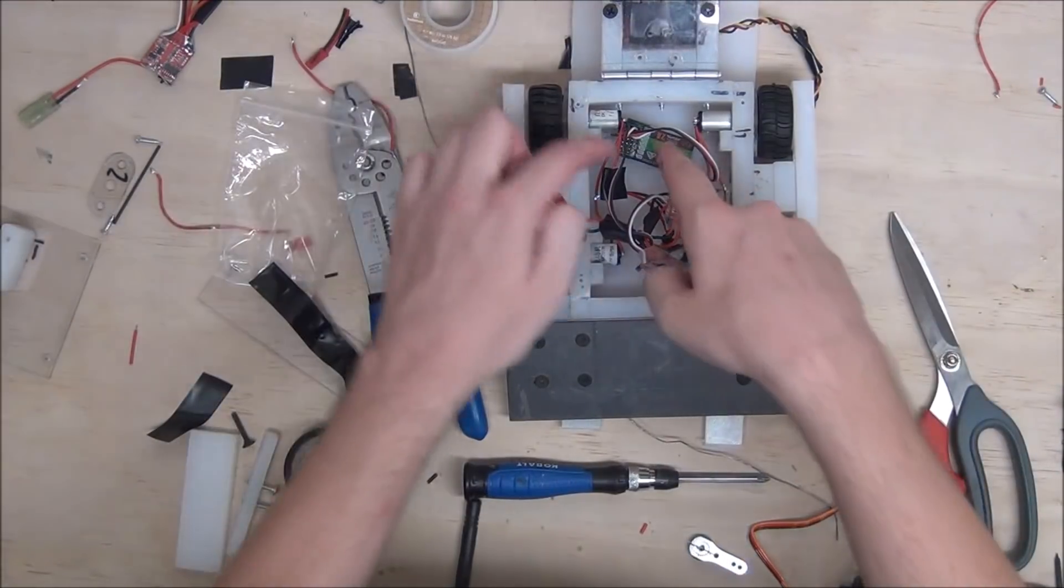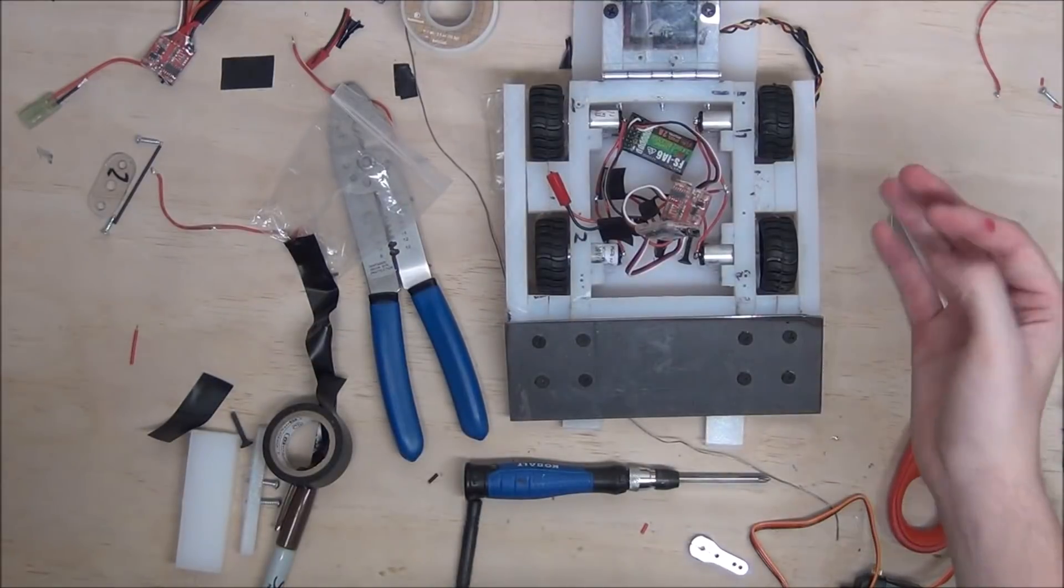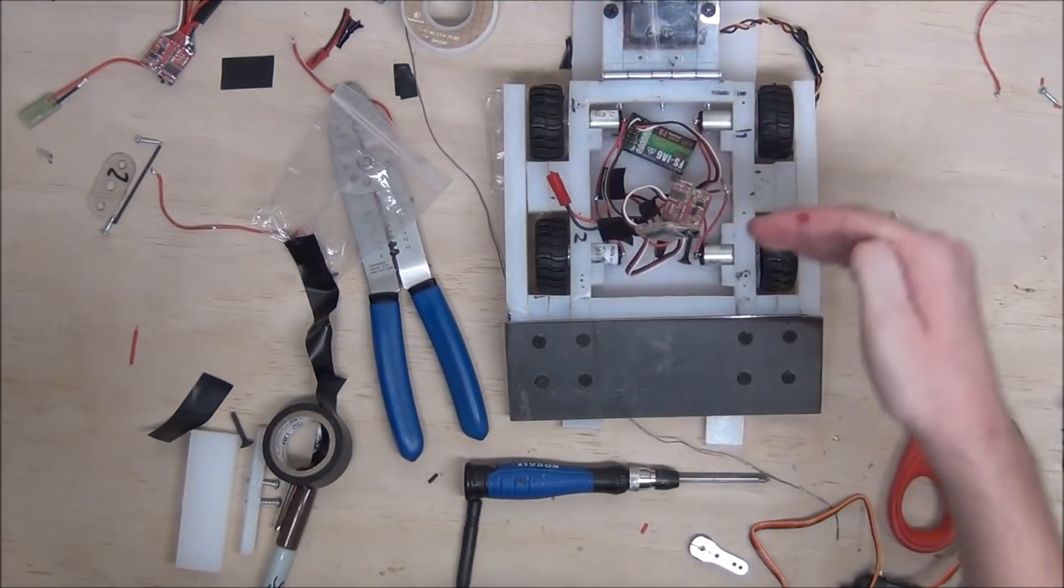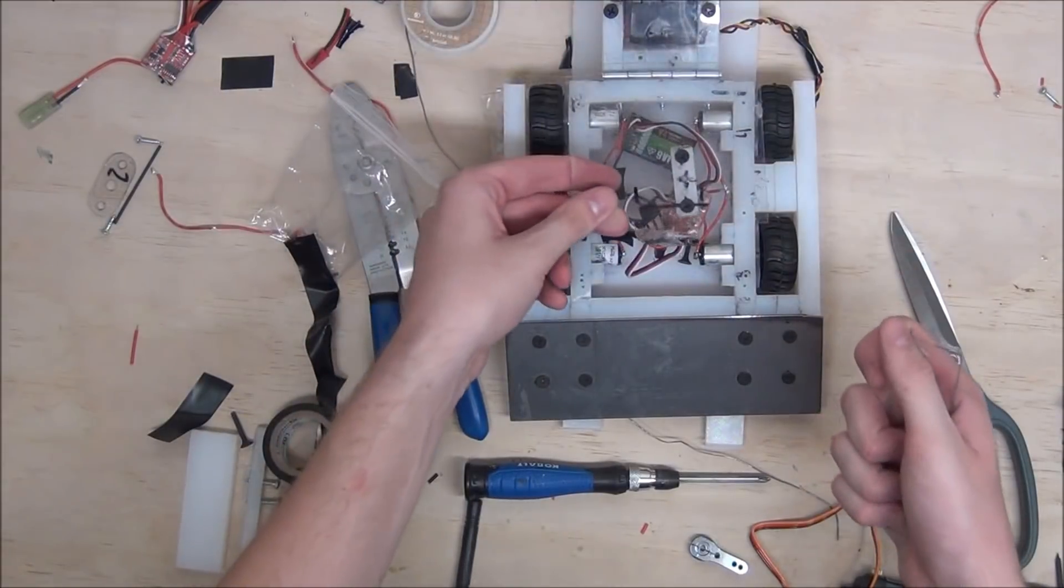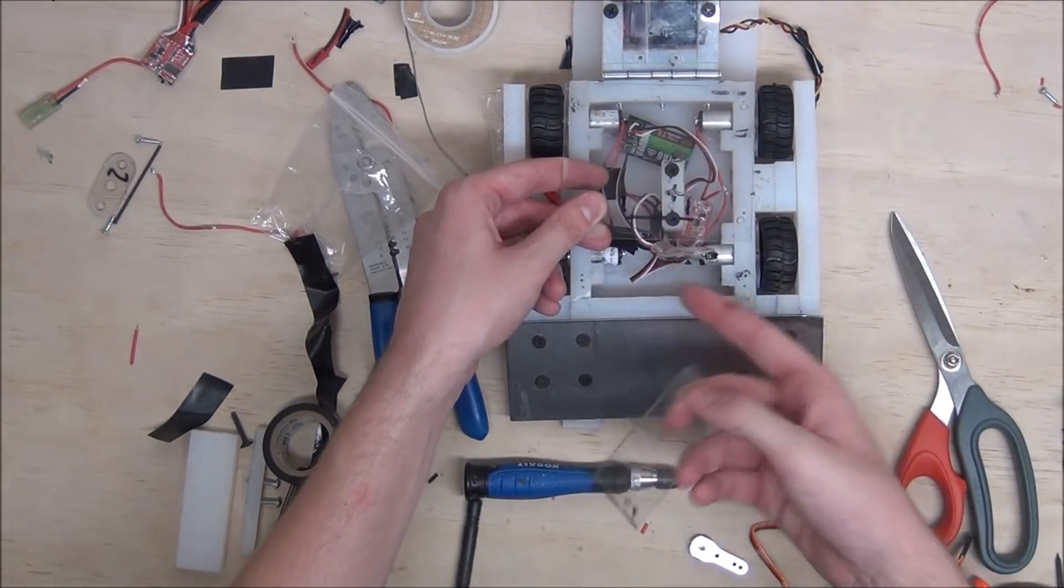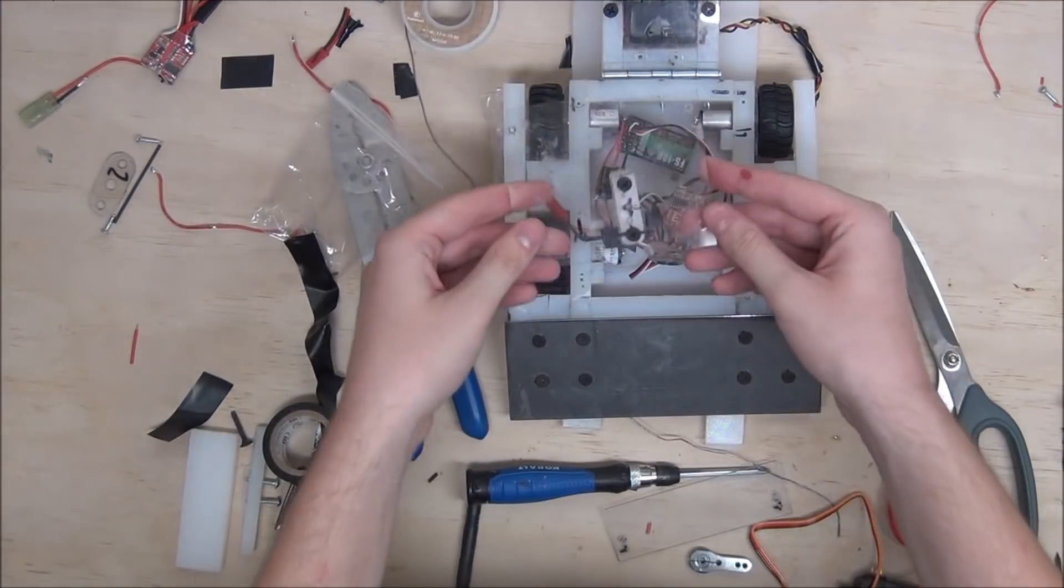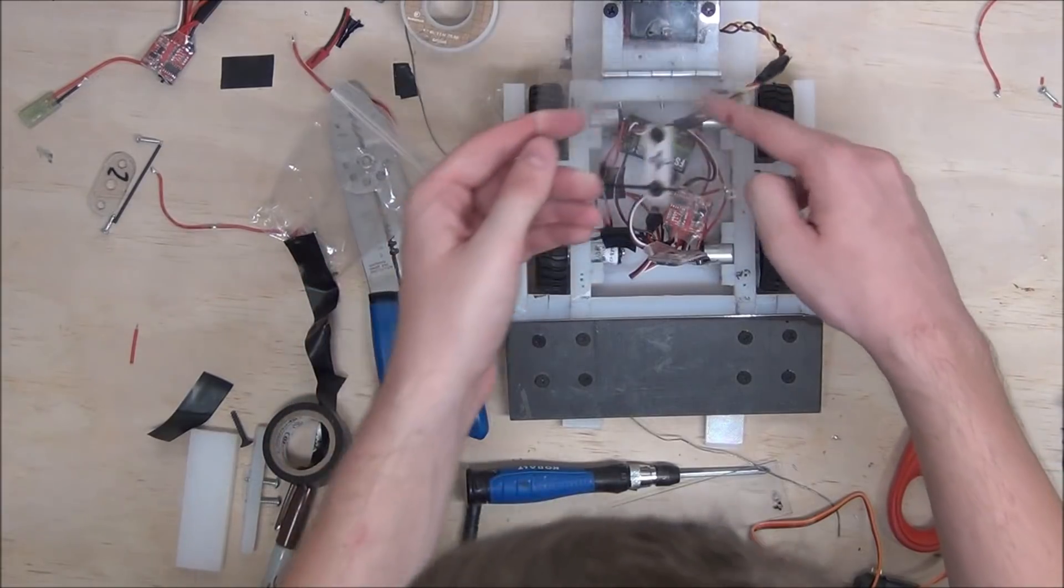So I went ahead and plugged everything into the receiver. So now we can go ahead, pack it in, and close it up. I realized that taking off the whole cover every time we need to access the battery was super annoying. So I went ahead and cut it into two pieces. We have our main piece that the servo will attach to, and then we have this little tiny door that will access the battery through. So we can go ahead and bolt these on now, and of course, making sure to plug in our servo into the receiver while we do it.